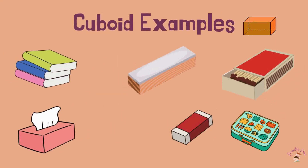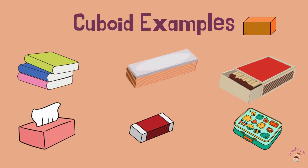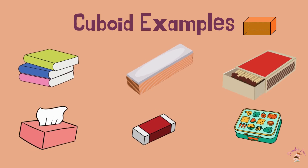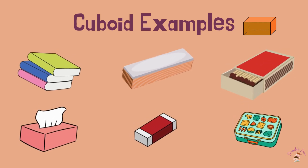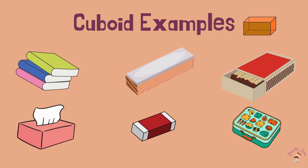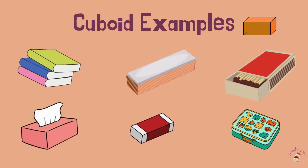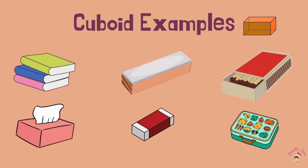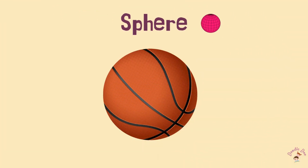Examples of cuboids: Books, Duster, Magic Box, Tissue Paper Box, Tiffin Box. Now moving to Sphere.